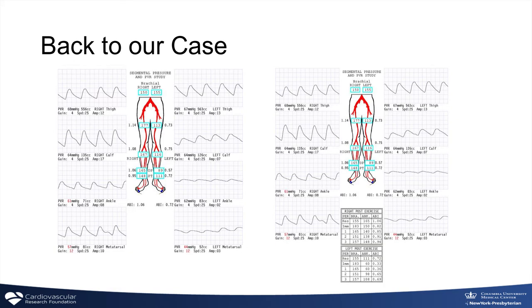Looking at our patient's results: the pulsatile waveforms on the right leg look normal, while the left leg shows flatlines — and a flatline in medicine is generally a bad thing. On her left symptomatic leg, pulses measured at the ankle are diminished, with less pulsatility. When she exercises by walking, those pulses get even worse, reflected in the pressure measurements. She clearly has documented peripheral arterial disease.